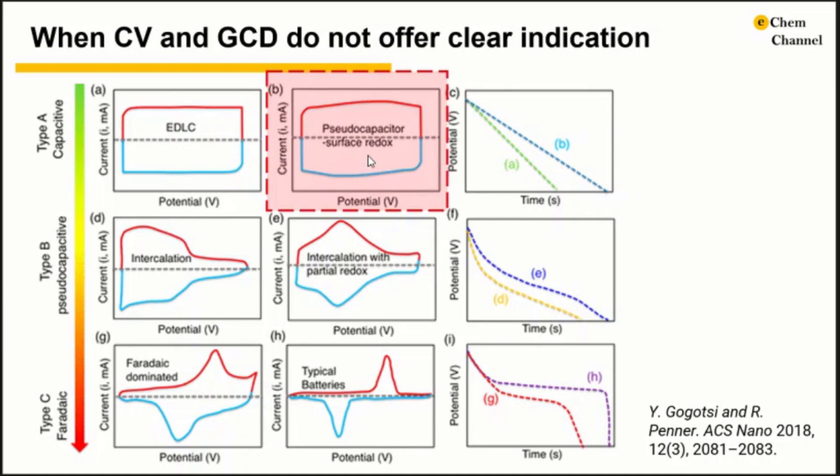For example, a pseudocapacitor can also show a close to rectangular-shaped CV due to the overlap among a series of charge transfer processes at a wide potential window. So in this case, it is hard to tell the difference between the EDLC and the pseudocapacitor.